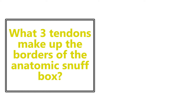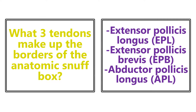What three tendons make up the borders of the anatomic snuffbox? You'll need to dig back into your first-year medical school anatomy. It's going to be the extensor pollicis longus, the extensor pollicis brevis, and the abductor pollicis longus. Some people call this a 'brevis sandwich' because the brevis is in the middle with two longus tendons on the outside — whatever helps you remember the composition of the anatomic snuffbox.